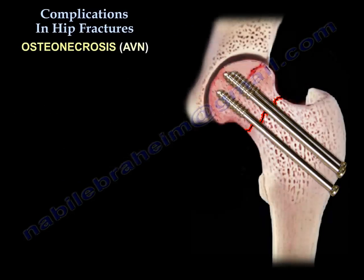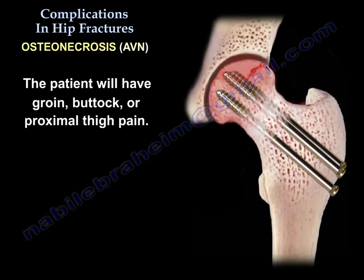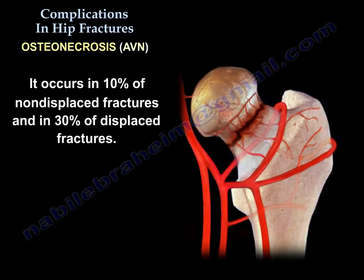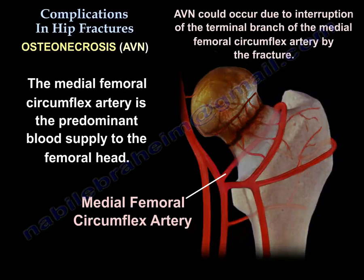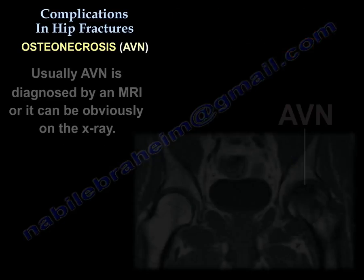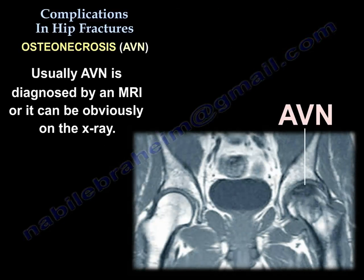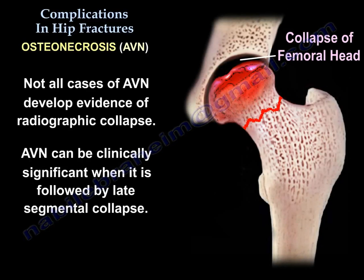Another complication is osteonecrosis or AVN. The patient will have groin, buttock, or proximal thigh pain. It occurs in 10% of non-displaced fractures and 30% of displaced fractures. The medial femoral circumflex artery is the predominant blood supply to the femoral head. AVN is diagnosed by MRI or, if obvious, by X-ray.